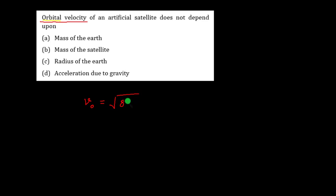Orbital velocity of an artificial satellite does not depend on — the formula is Vo = √(gR). It depends on the mass of the earth, yes. It does not depend on the mass of the satellite. So that is incorrect; the rest are correct options.